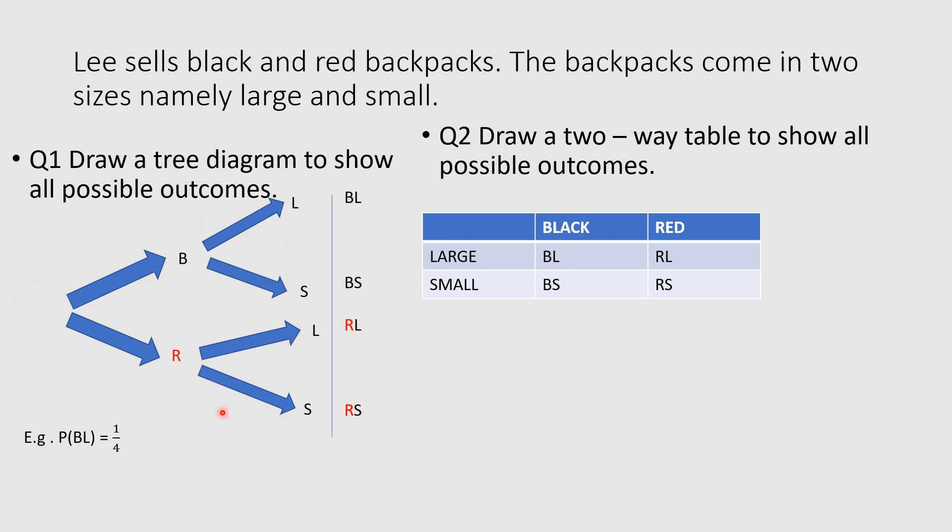Now from my tree diagram, I'm going to list all possible outcomes. To do this, I follow the branches on the tree diagram. So I'm going to say black large, or I could go with the black backpack and small. My second option would be red large, or I could go with red small.